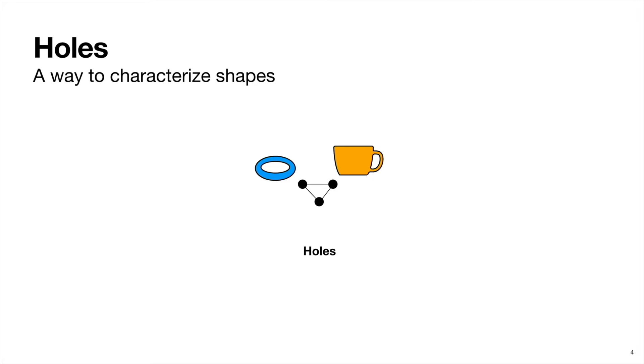And this is like the joke that a topologist looks at a coffee mug and a donut and sees the same thing. The reason being that one can continuously transform one into the other. For the aficionados out there, this is called a homeomorphism. But the fundamental thing here is the number of holes.